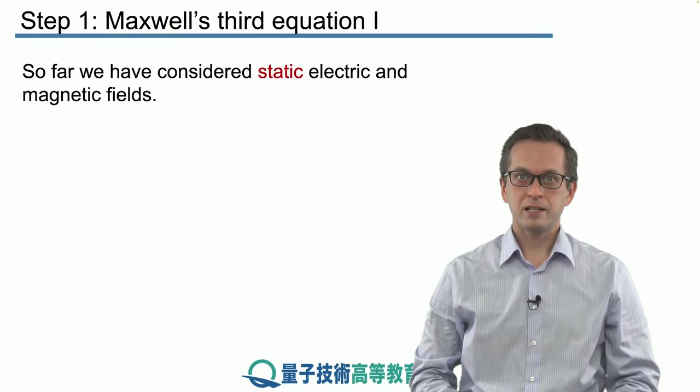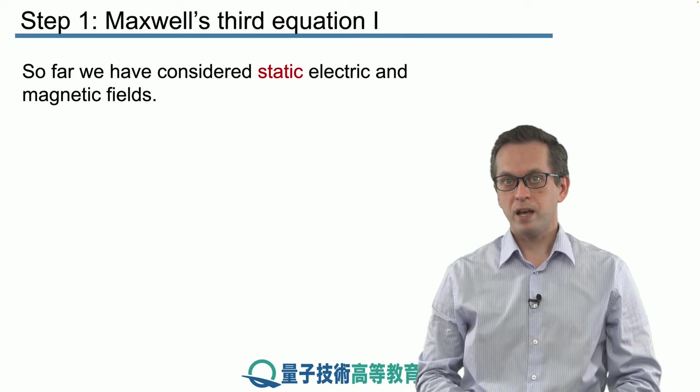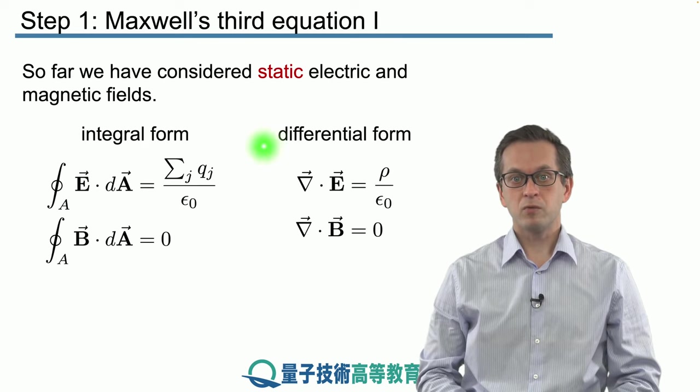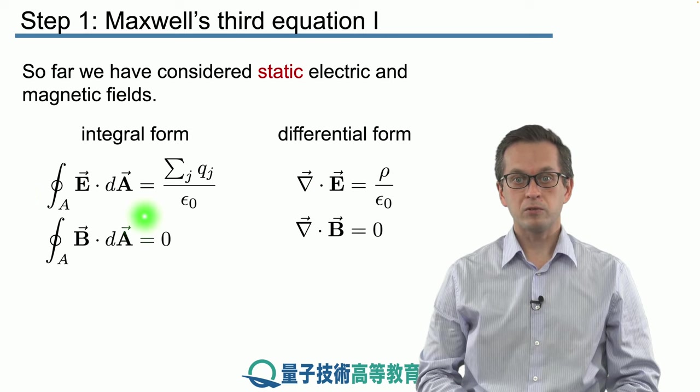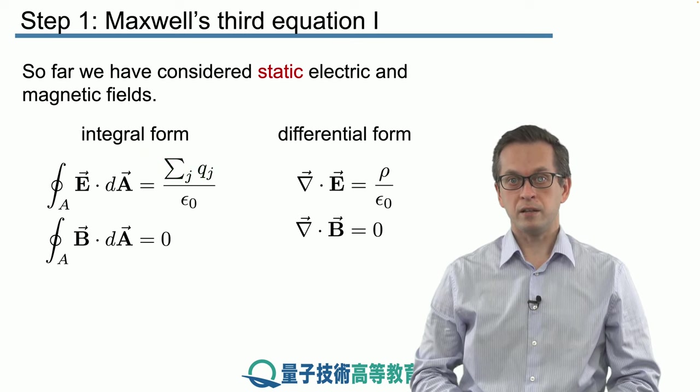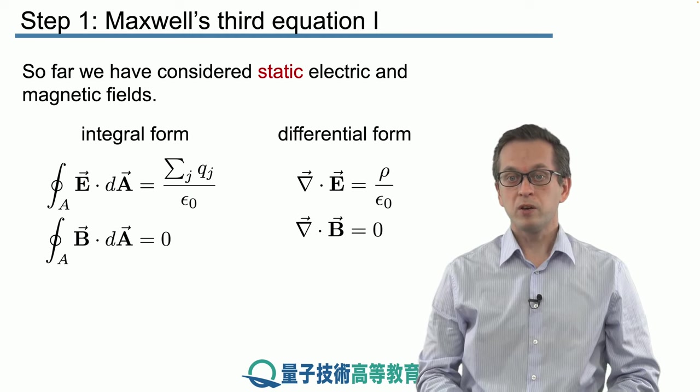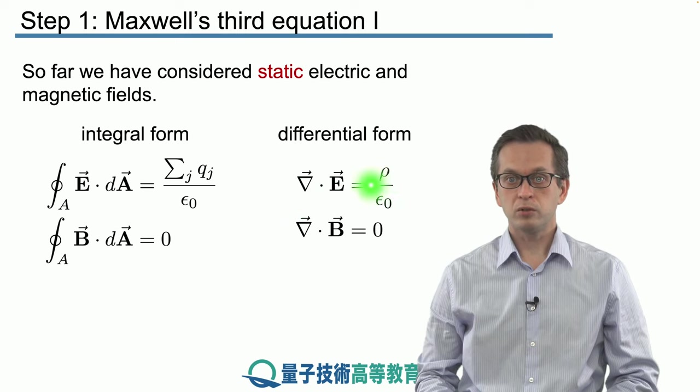In the previous lesson we saw how static electric and magnetic fields behave and we derived the following two Maxwell's equations. The first one related the flux of an electric field through an enclosed area to the sum of all the charges within that area. We also derived its differential form which related the divergence of the electric field to the charge density.